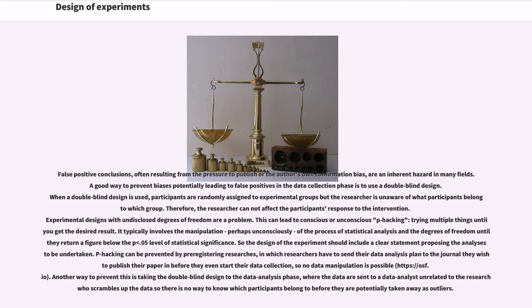Experimental designs with undisclosed degrees of freedom are a problem. This can lead to conscious or unconscious p-hacking, trying multiple things until you get the desired result. It typically involves the manipulation, perhaps unconsciously, of the process of statistical analysis and the degrees of freedom until they return a figure below the p-less-than-0.05 level of statistical significance. So the design of the experiment should include a clear statement proposing the analyses to be undertaken. P-hacking can be prevented by pre-registering researches, in which researchers have to send their data analysis plan to the journal they wish to publish their paper in before they even start their data collection, so no data manipulation is possible.